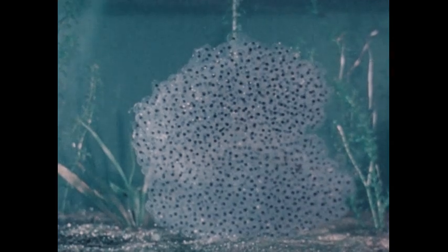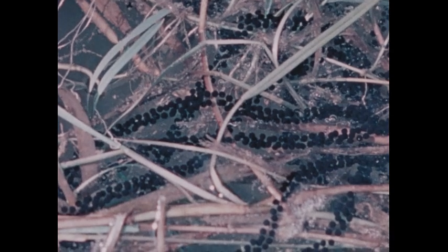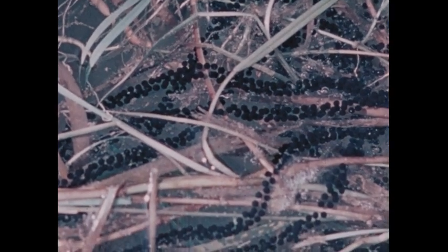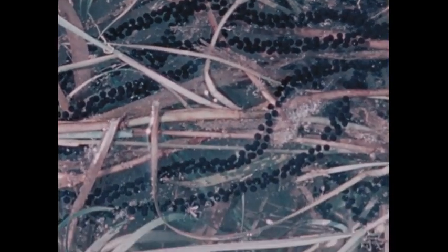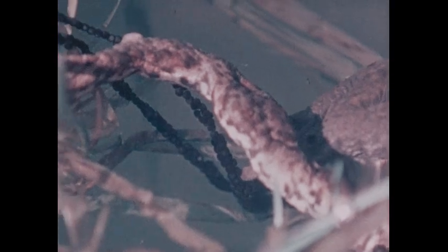Frog eggs form in jelly-like clumps, while toad eggs emerge as long peppery strings embedded in jelly. But in both cases, the jelly swells up when it touches water and allows the eggs to float in the pond.